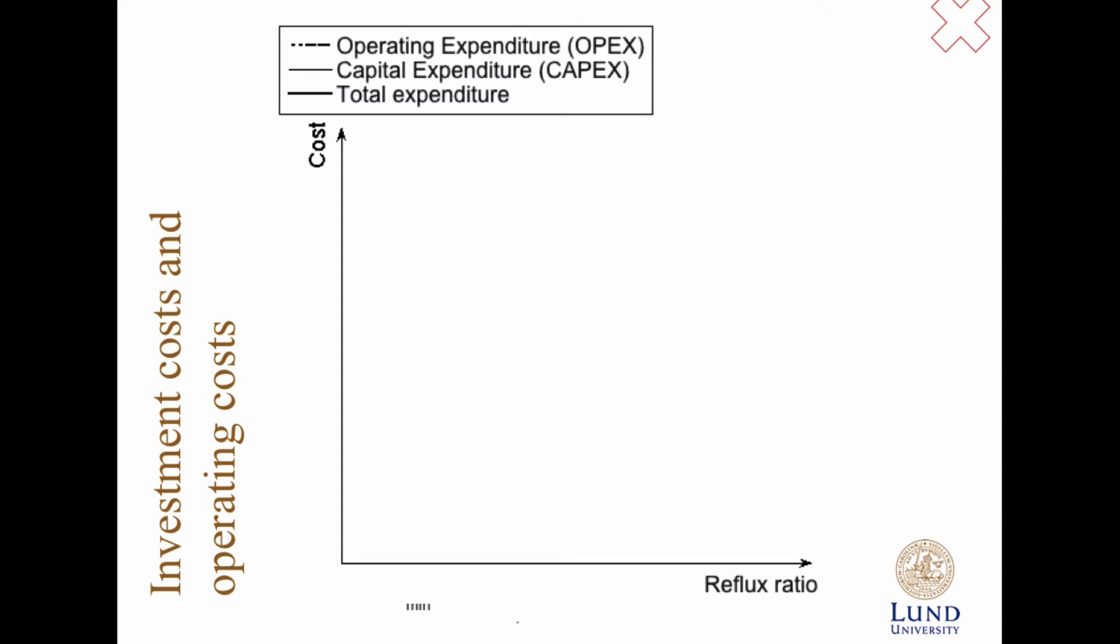Calculating the number of physical trays is an important step in a design calculation. And we won't go through this in this course, how you do the next step. The next step is money. How much money will it cost to run the thing? And how much money will it cost to invest? Now, we will look at the reflux ratio and the cost. There is a minimum reflux ratio, right? So we can't design anything with a lower reflux ratio than rmin.